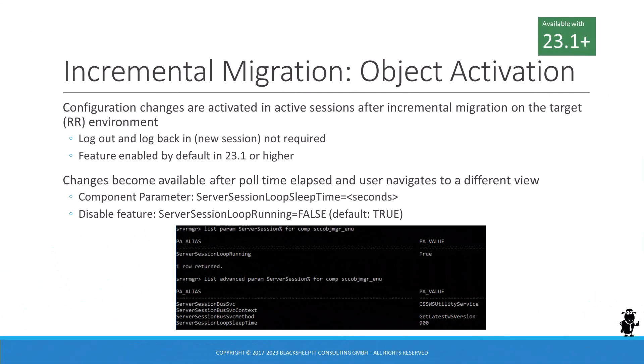The final enhancement in the Siebel CRM 23.1 update package is the ability of an active Siebel application session to detect a new workspace version automatically. In versions prior to 23.1, users would have to start a new session to take advantage of new configurations delivered by incremental migrations. With 23.1, Oracle has added a new set of server component parameters to implement a polling cycle. The cycle time defaults to 15 minutes but can be modified by server administration. At the end of each polling cycle, the Object Manager looks up the latest workspace version and, if the version has changed, reloads the session's repository cache.